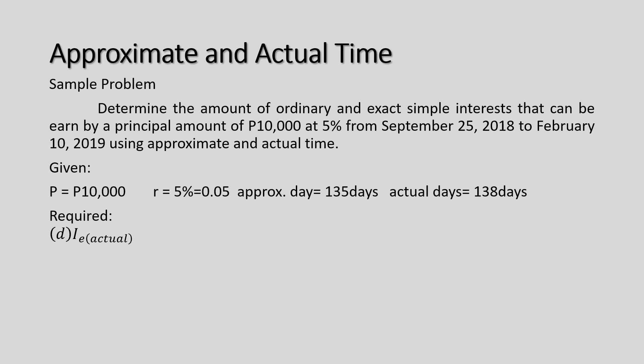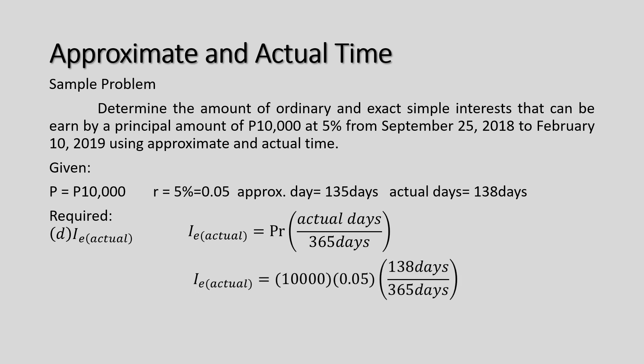For letter D — exact simple interest using actual time — the formula is P times R times the actual number of days divided by 365. Substituting: P10,000 times 0.05 times 138 days divided by 365 days gives P189.04, which is our exact simple interest using the actual number of days.